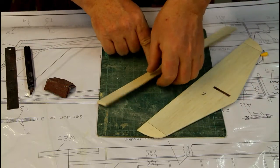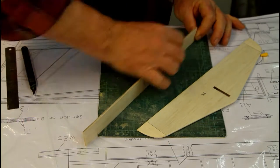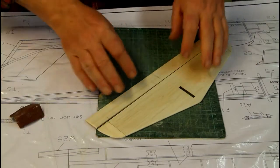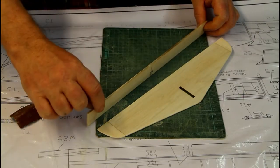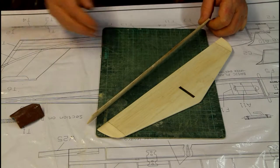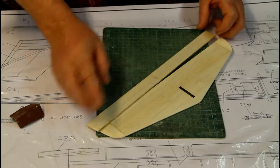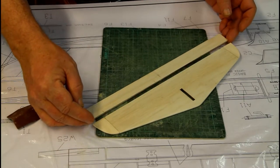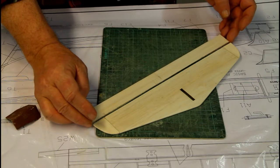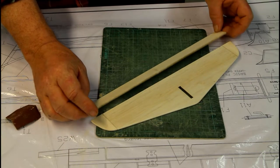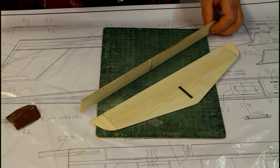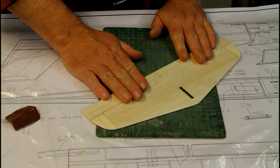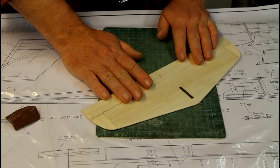So now the instructions tell us to chamfer the leading edge of the elevator and then the plans show us four hinges which actually are included in the kit. But I don't really want to do that. I don't want to put hinges in something that is only three millimeters thick. What I want to do and I'm going to do is I'm going to take not a double chamfer but a single one and then I'm going to use the covering film to attach the elevators. I'll show you how to do that.